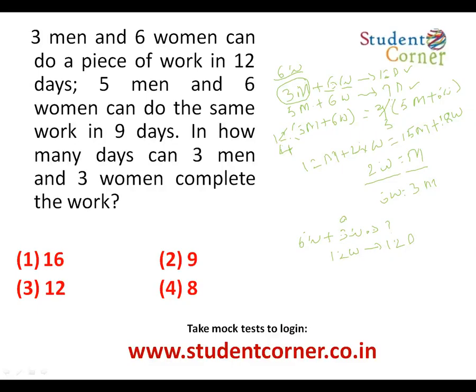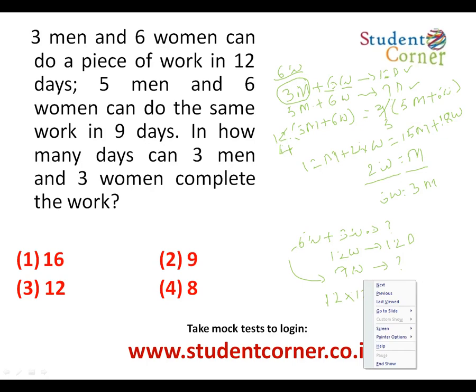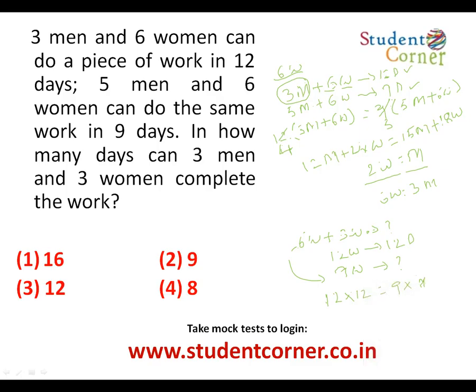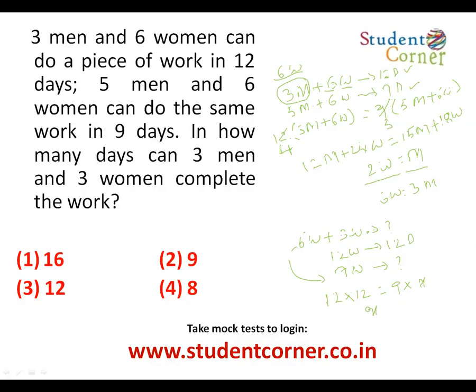We know 6 women (replacing 3 men) can do it in 12 days, meaning 6W×12 = 72 units total. Now 9 women must complete 72 units: 72÷9 = 16 days. Therefore 3 men and 3 women can complete the work in 16 days.